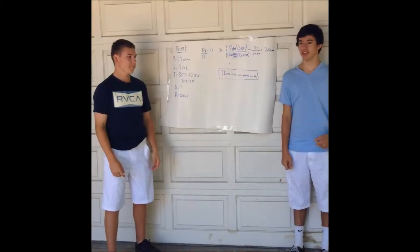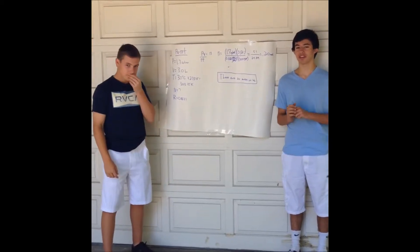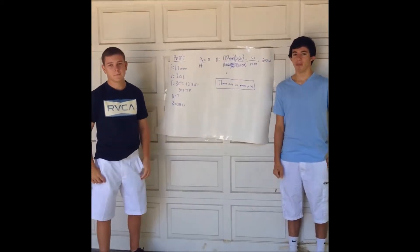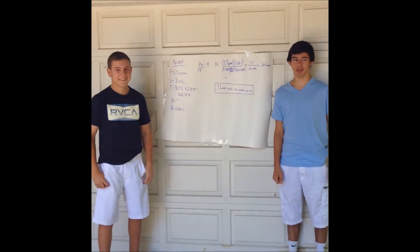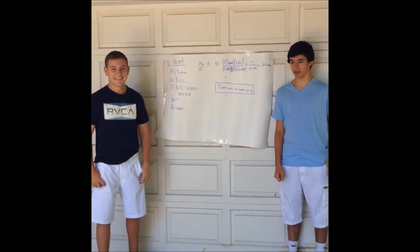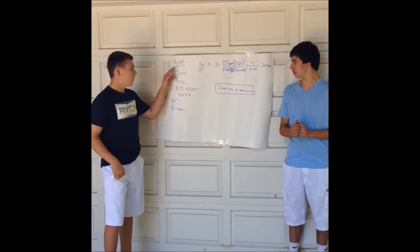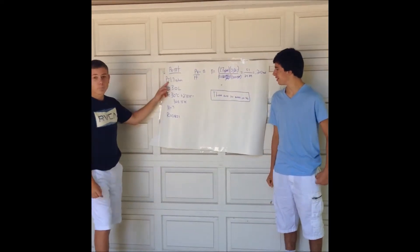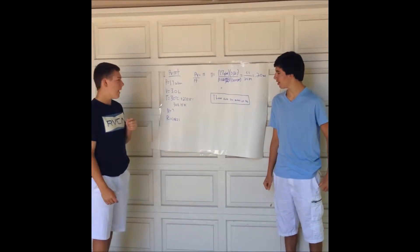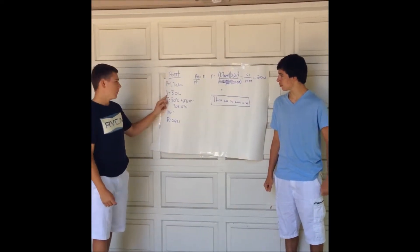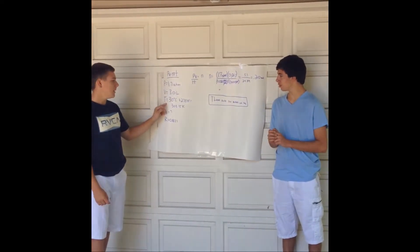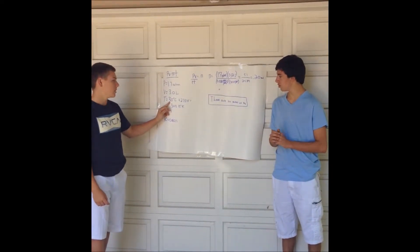Now let's try a problem. The equation is: how many moles of nitrogen will occupy 3.0 liters at 1.7 atm and 30 degrees Celsius? So the equation is PV equals NRT. P pressure is equal to 1.7 atm, the V volume is equal to 3.0 liters, and T is equal to 30 degrees Celsius.